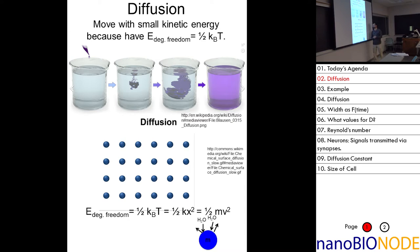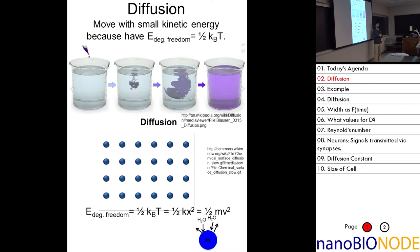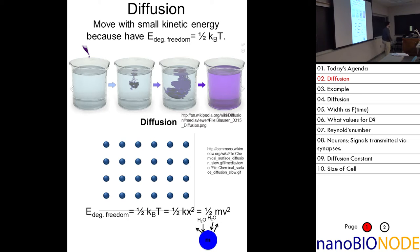When you put a drop of ink in water, it jiggles around and eventually spreads because water molecules are hitting it. By the equipartition theorem, one-half k_B T equals one-half mv-squared, so the velocity will depend on the temperature. And eventually the spot spreads out.